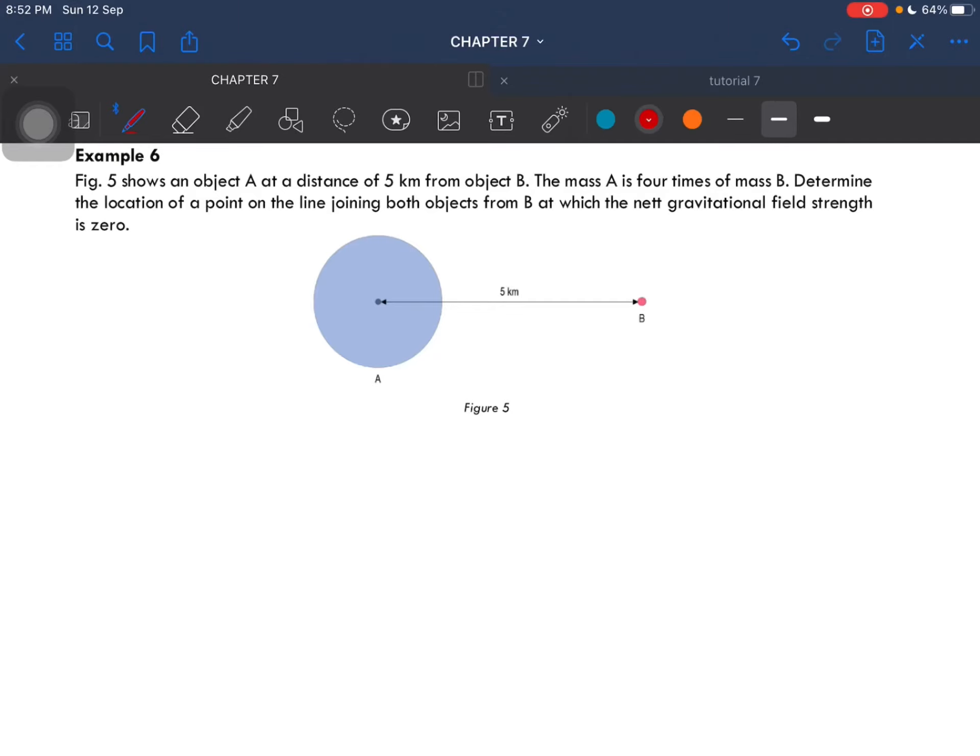Example number 6. Figure 5 shows an object A at the distance of 5 km from object B. The mass A is 4 times of mass B. Determine the location of a point on the line which joins both objects from B at which the net gravitational field strength is 0.